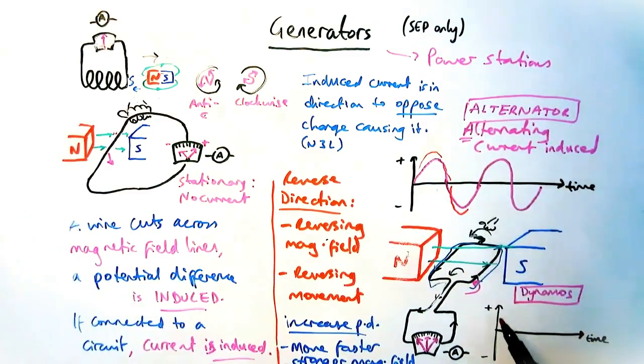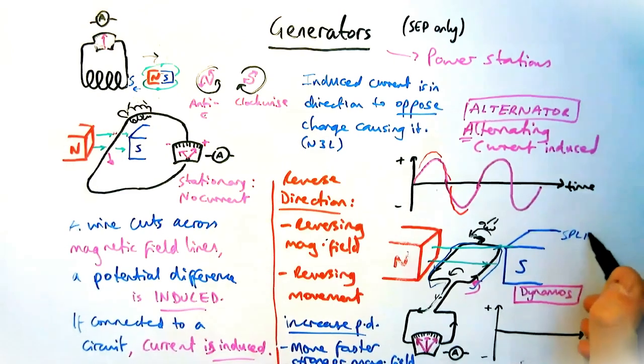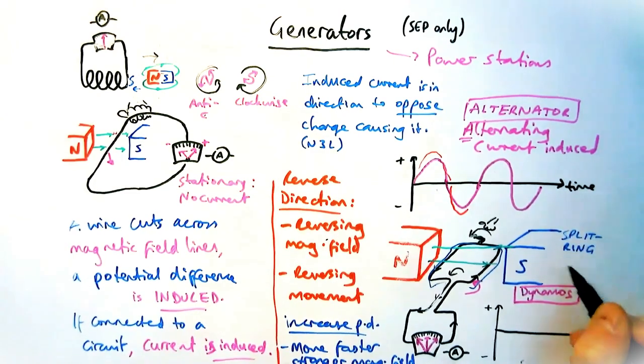A dynamo produces direct current. And how it does that is the same method in the motor effect, which switches over the current to keep the motor turning, is our friend the split ring commutator. So the split ring commutator reverses the current every half turn, just like in a motor.